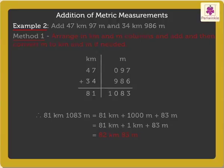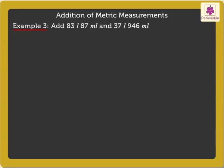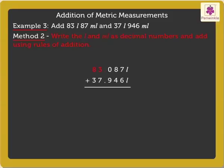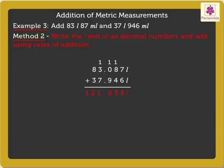Now let's quickly solve one more example using the second method. Write the liters and milliliters as decimal numbers and add using rules of addition learned earlier. We get 83.087 liters and 37.946 liters. Thus, on adding these numbers, we get 121.033 liters, which is 121 liters 33 milliliters.